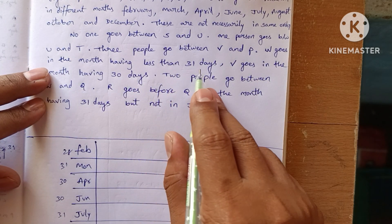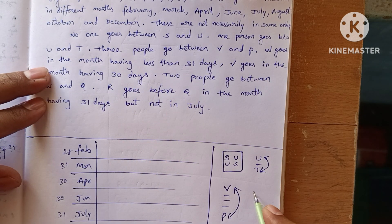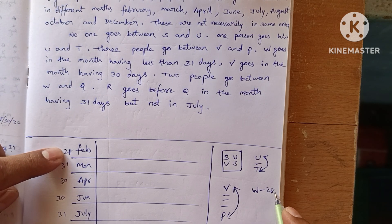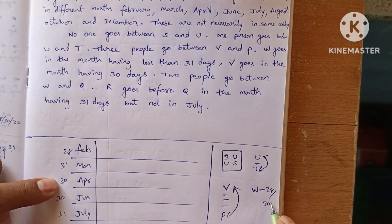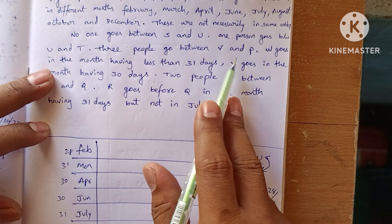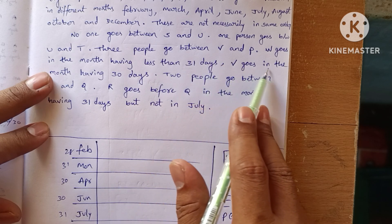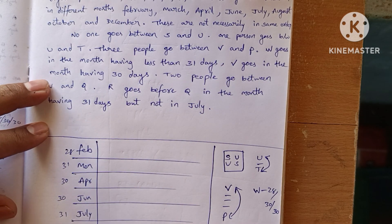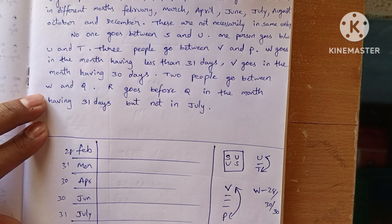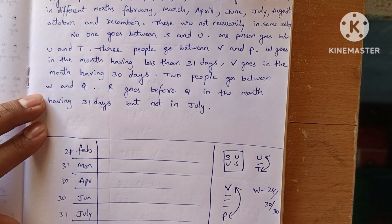W goes in a month with less than 31 days, so W goes in either February (28 days), April (30 days), or June (30 days). V goes in a month having 30 days. Two people go between W and Q.